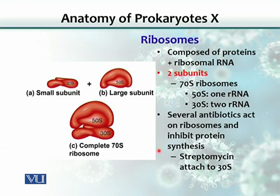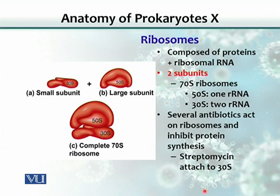Several antibiotics act on these ribosomes and inhibit protein synthesis, making ribosomes a target for many antibacterials used for disease prevention. Streptomycin is one example — it attaches to the 30S subunit and blocks the synthesis of proteins. If proteins are not synthesized by the bacterium, the bacteria will not be able to replicate.